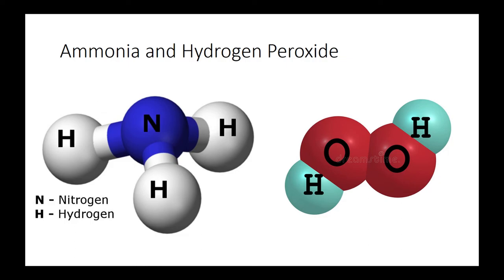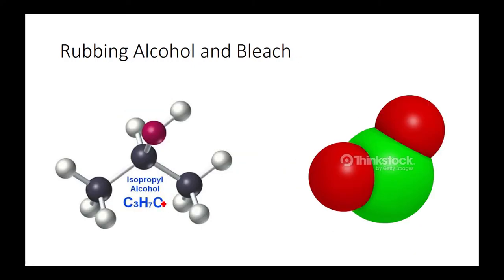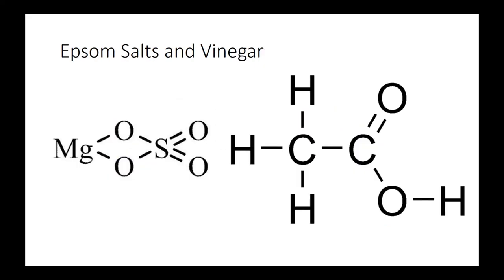So here are the chemicals. You want to know all the chemical formulas. That's what they're mostly tested. And you might want to know some facts, harmful stuff. First we have ammonia NH3, and then hydrogen peroxide H2O2. Rubbing alcohol and bleach. Here's alcohol and bleach. Epsom salts, MgSO4, or vinegar, C2H4O2.